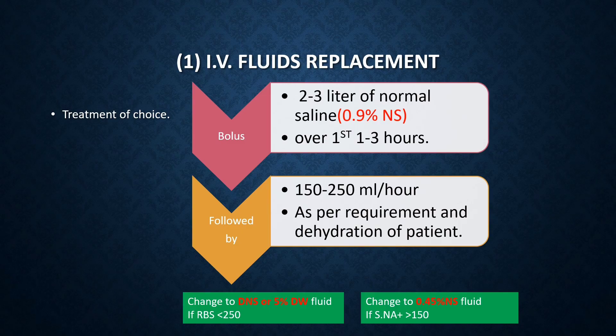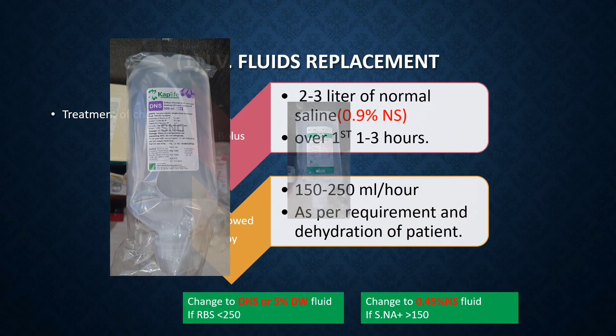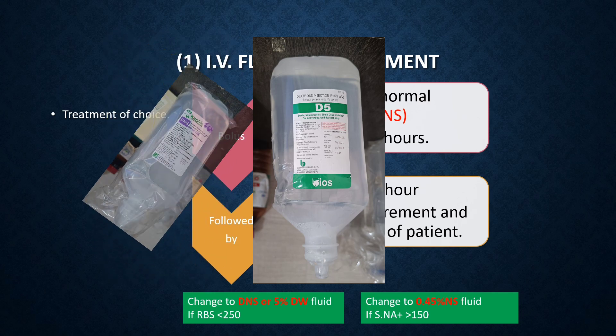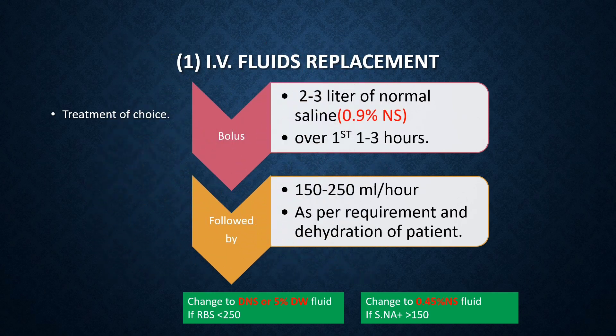Change the fluid to DNS or 5% dextrose water if RBS falls below 250 mg/dL. Change to 0.45% normal saline if serum sodium is more than 150, meaning hypernatremia. This is all about fluid replacement.